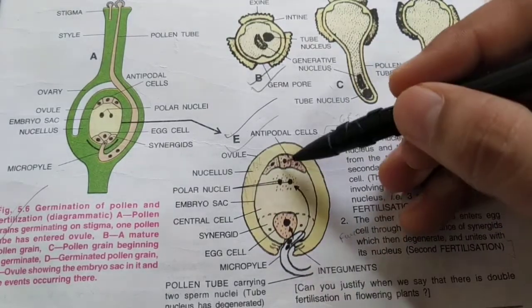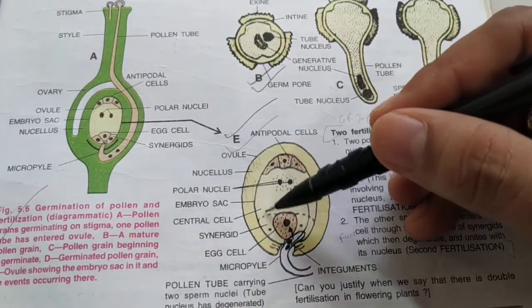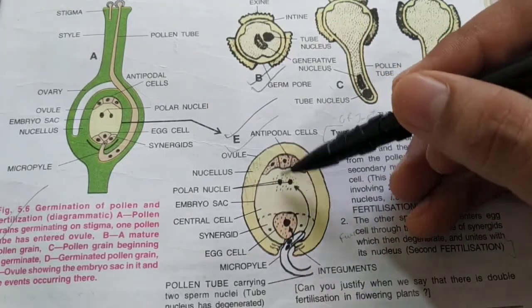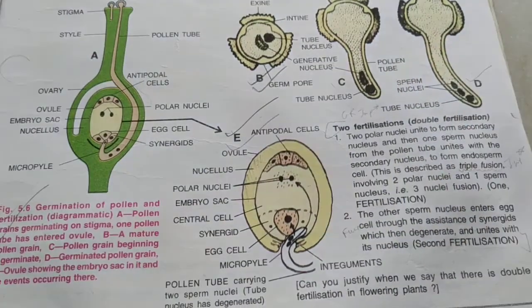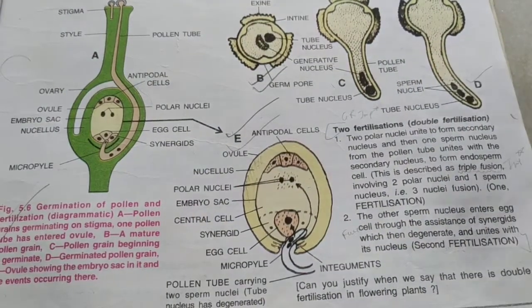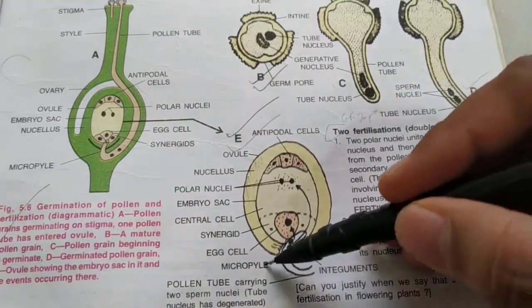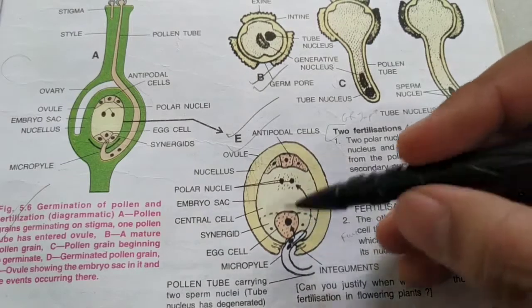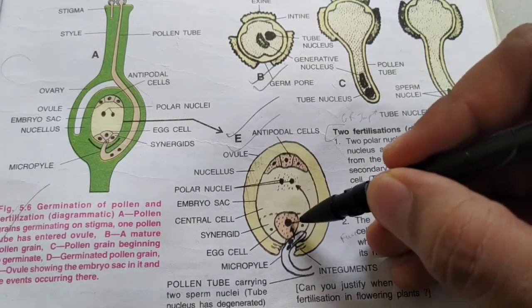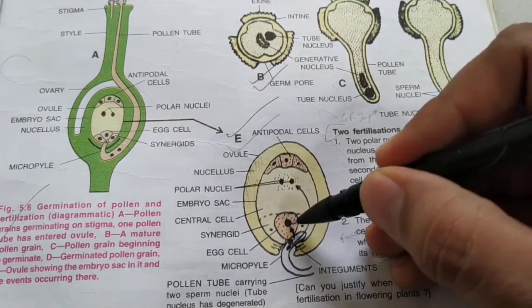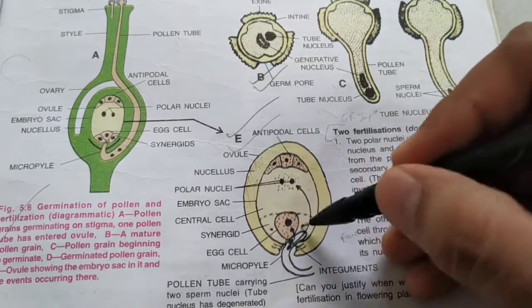Once the male gametes enter through the micropyle, one of the male gametes fertilizes the egg cell — the female gamete — with the help of the synergids.